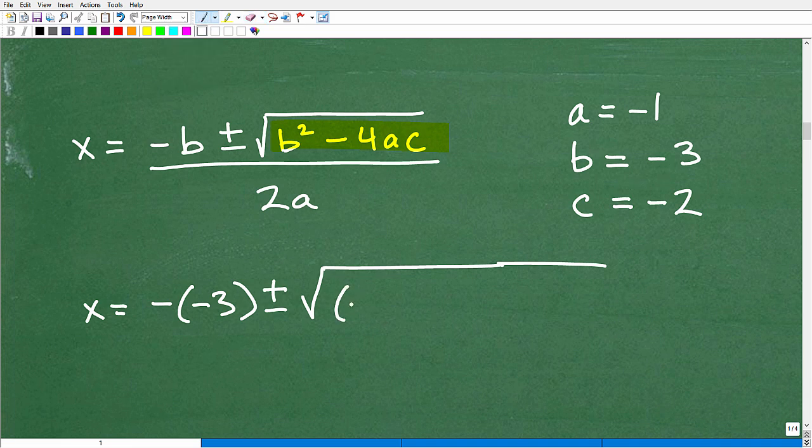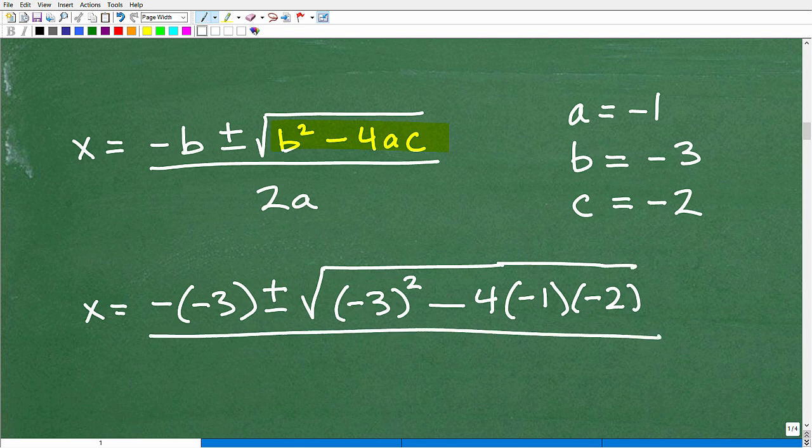So B squared is going to be negative three squared minus, this is a subtraction sign, four. Our A is going to be negative one and our C will be negative two. All over two times A, which is our A is negative one. So that would be two times negative one. And when you do this, when you plug in your values, you're going to double, triple check. Now I've got everything plugged in correctly, negative one, negative three, negative two. You're checking the formula. You're checking everything else. And then from this point forward, you're just working this one step at a time, being super cautious not to make any errors with all these negative signs.